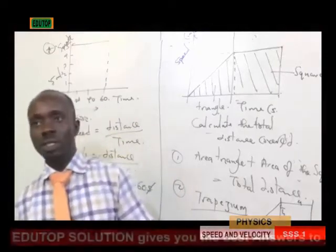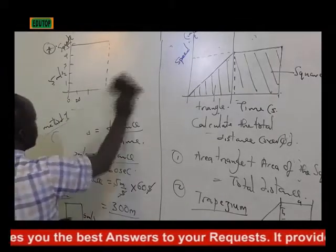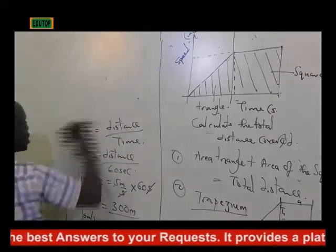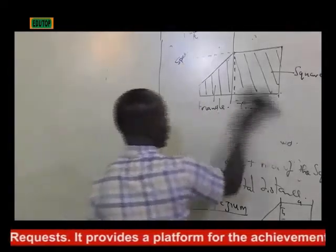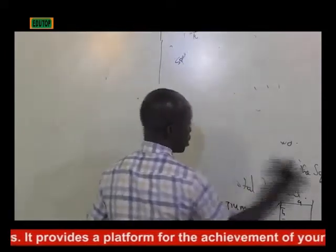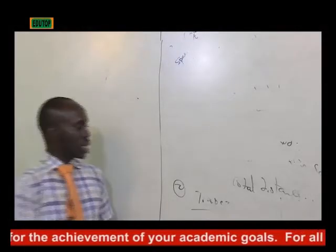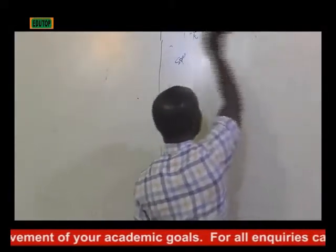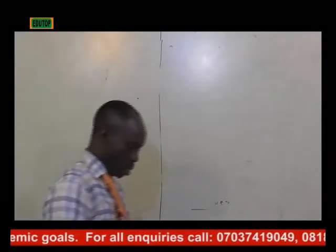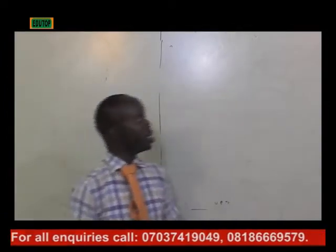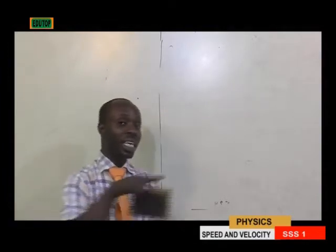Now let's move to velocity. We've been talking about speed. What is velocity, and what is the difference between speed and velocity? Velocity is the speed measured in a given direction. Speed is distance per time, while velocity is displacement per time.